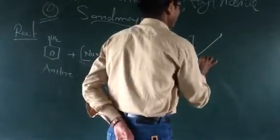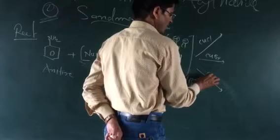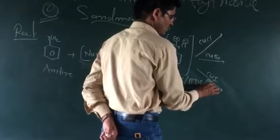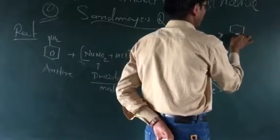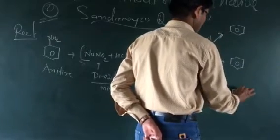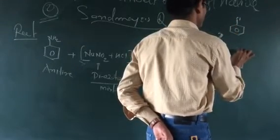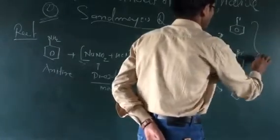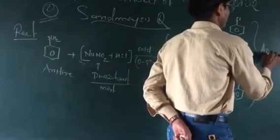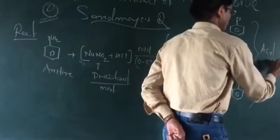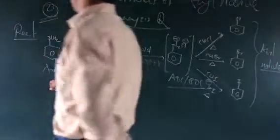If this diazonium salt is reacted with copper chloride, copper bromide, copper iodide, or potassium iodide, the benzene nucleus is retained and the products formed are chlorobenzene, bromobenzene, and iodobenzene respectively — all of which are aryl halides. This is the formation of chlorobenzene and bromobenzene starting from aniline as the primary aromatic amine.